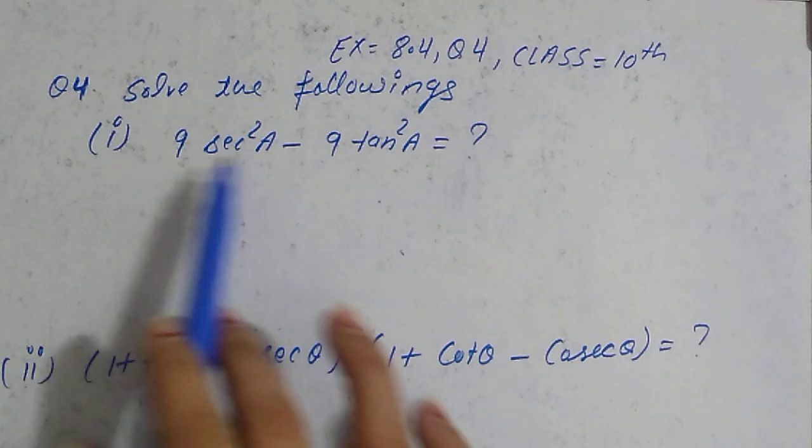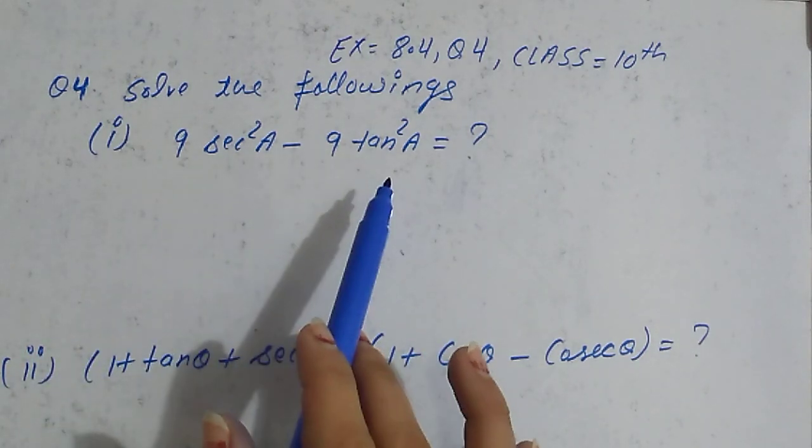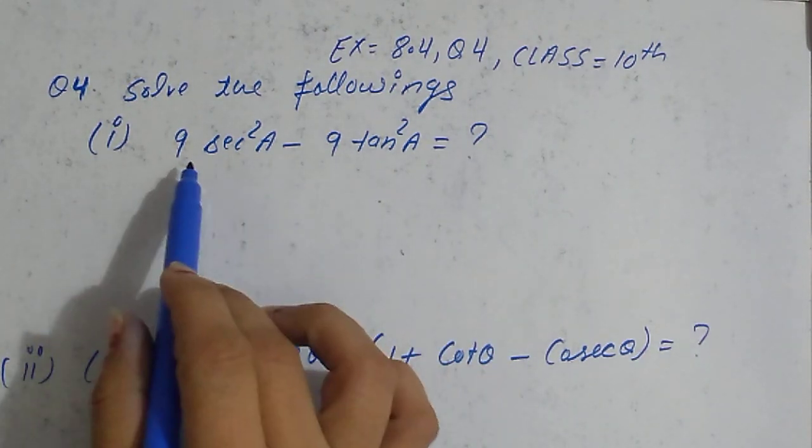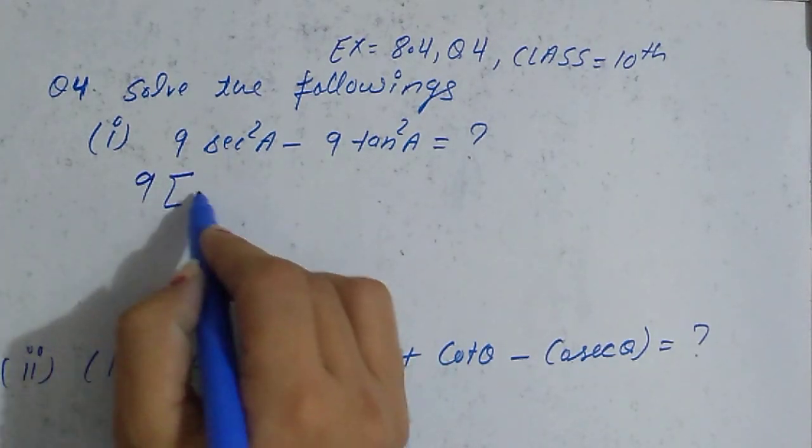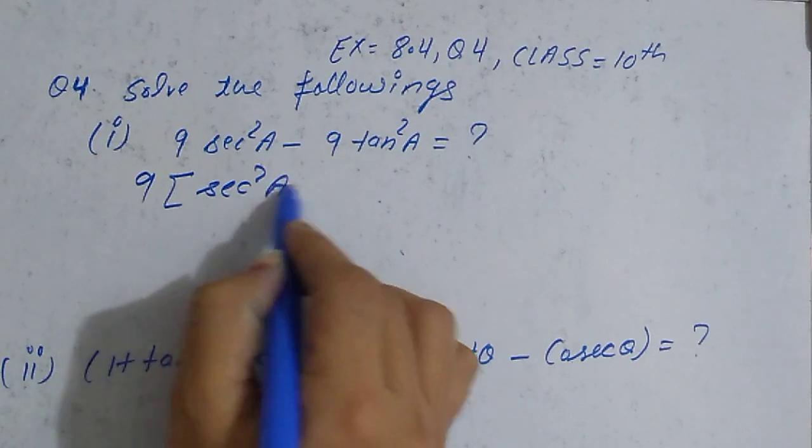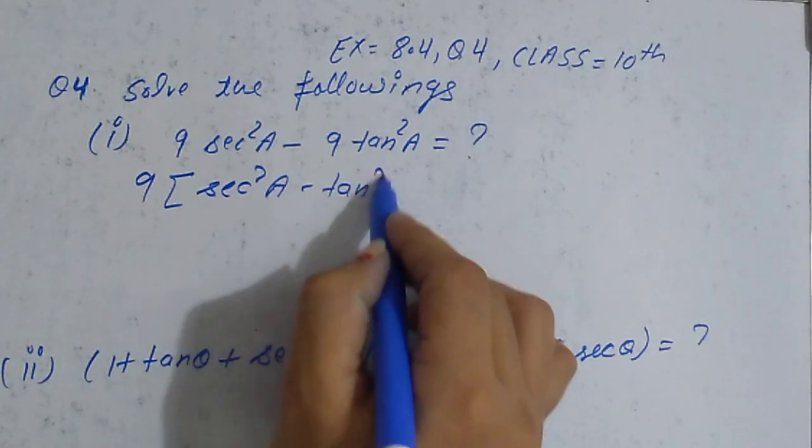Now let's see here. We are looking at that 9 is common, so we can take it outside. We can write it like this: 9[sec²A - tan²A], right?